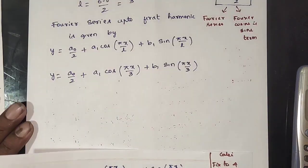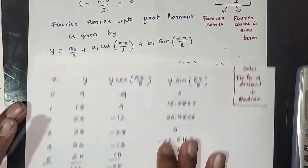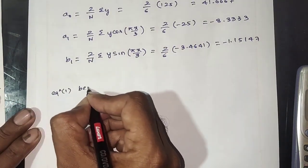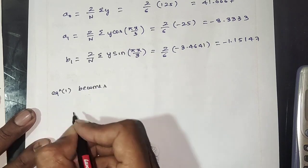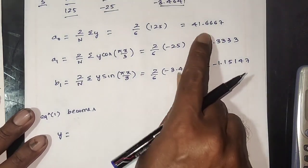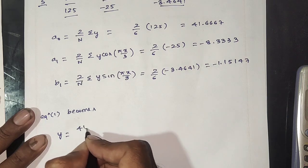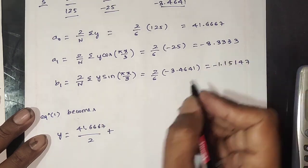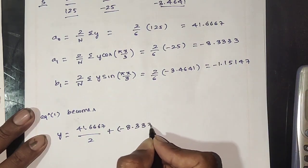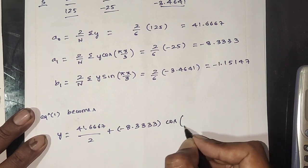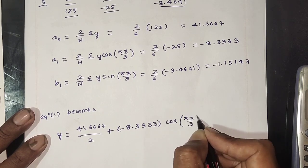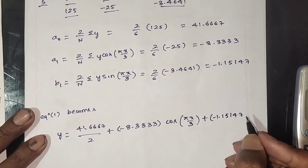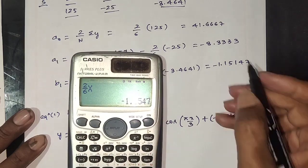Equation 1 becomes: f(x) = a0/2 — so a0 = minus 1.33333 — plus a1·cos(πx/3) plus b1·sin(πx/3), where b1 = minus 1.1547.